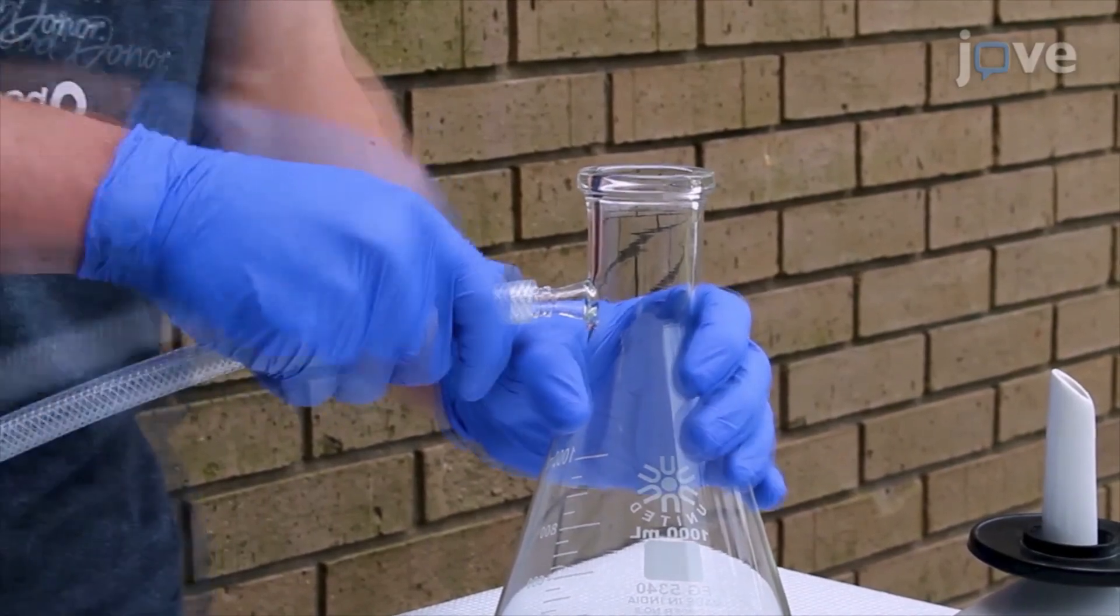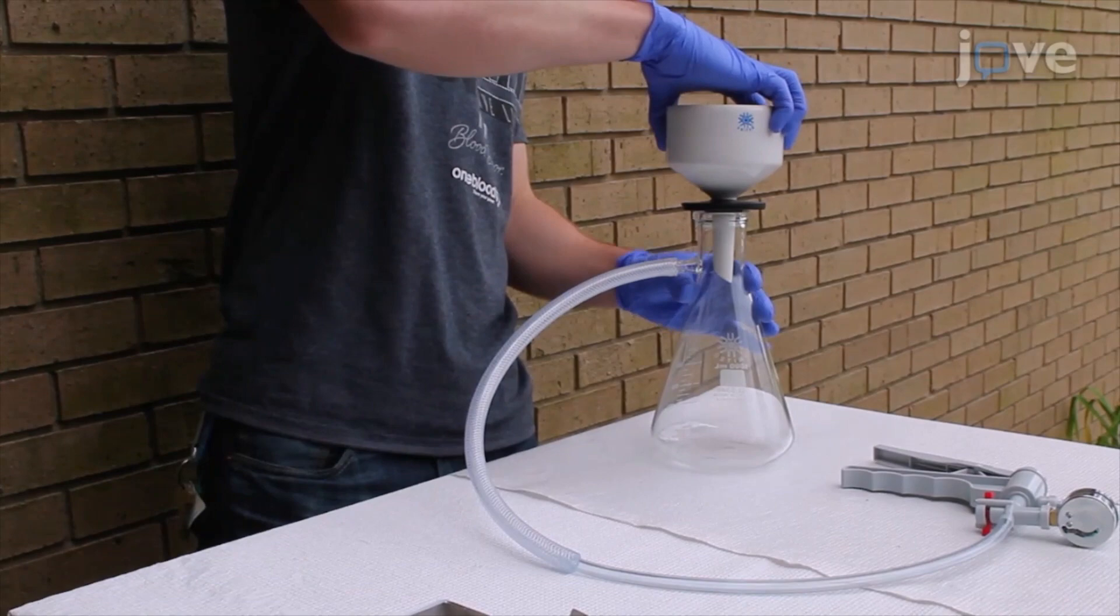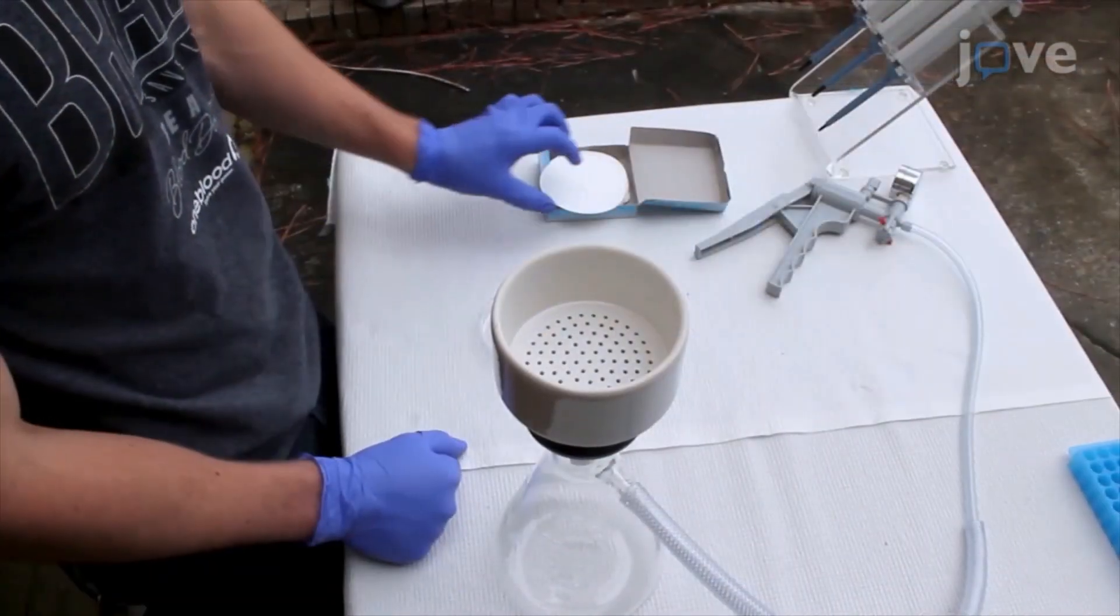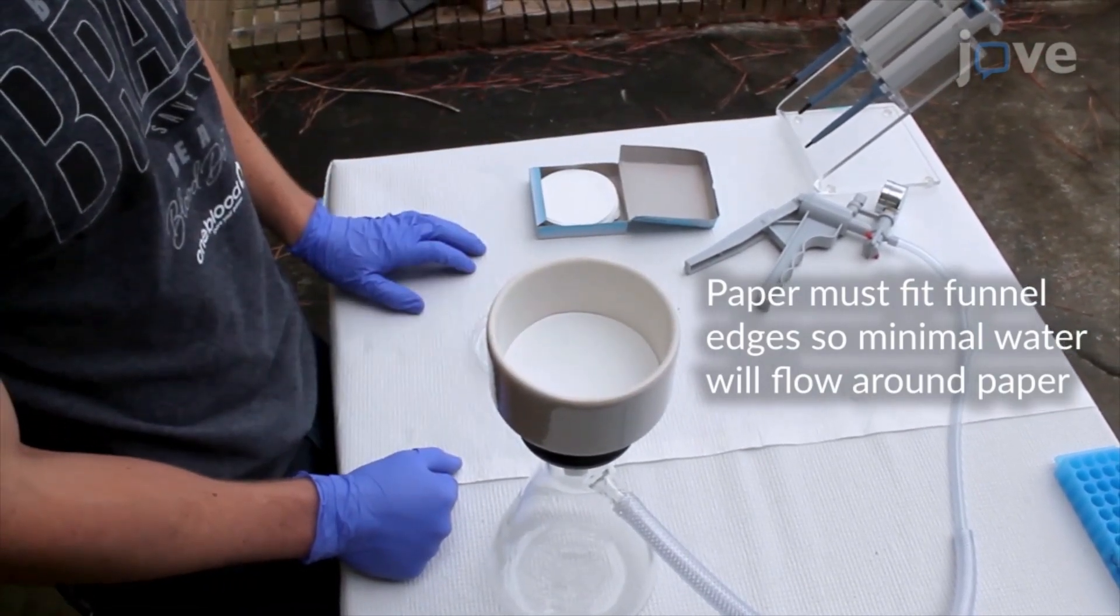Attach a filtering flask to a tube connected to a hand pump and fit a Buchner funnel into the rubber stopper in the mouth of the filtering flask. Then fit an appropriately sized piece of filter paper with a 15 micron retention size into the funnel.